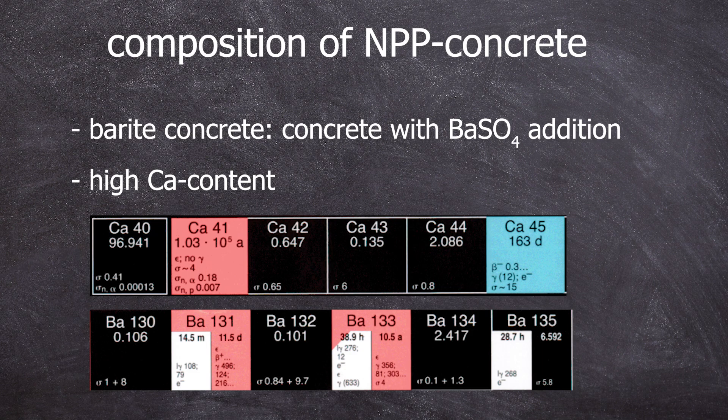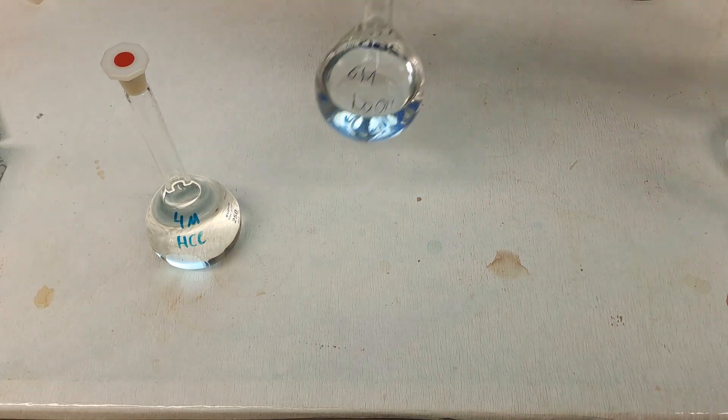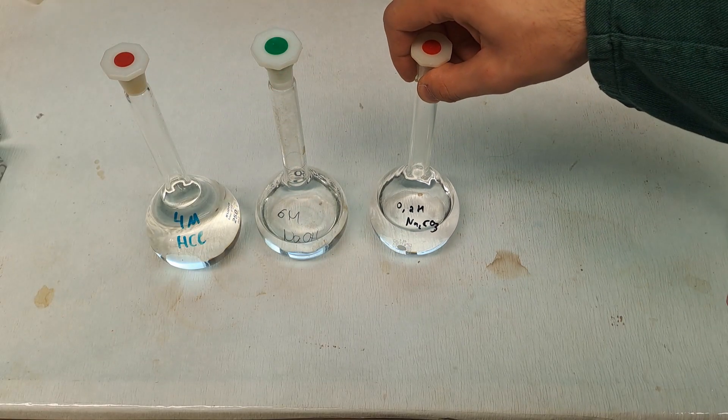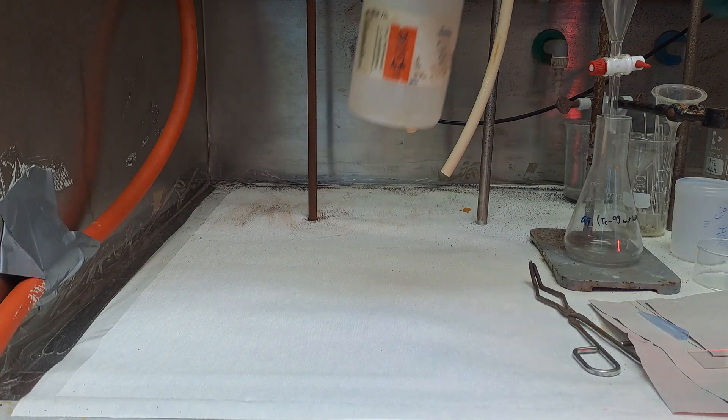To this concrete sample, there was also some potassium-40 added. More on that later. For this, we need 4 molar hydrochloric acid, 6 molar sodium hydroxide solution, 0.2 molar sodium carbonate solution, 4 molar sulfuric acid, and concentrated hydrofluoric acid.